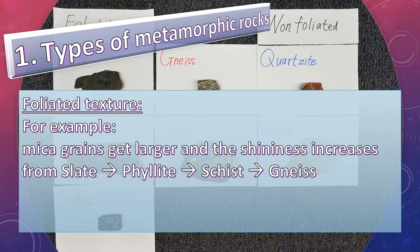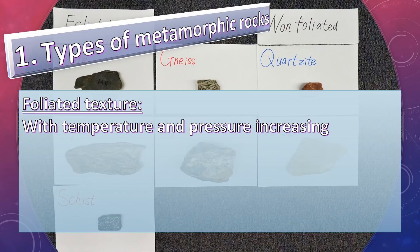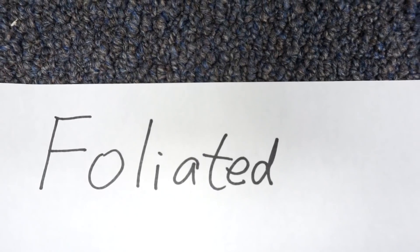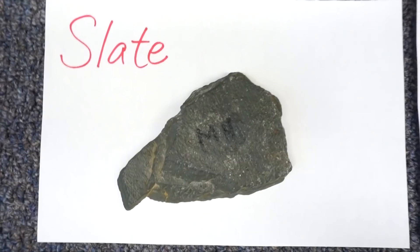For example, mica grains get larger and the shininess increases from slate to phyllite to schist to gneiss. With temperature and pressure increasing, the metamorphic grade is also increasing.